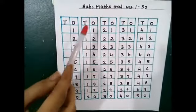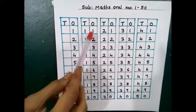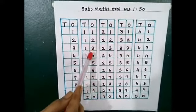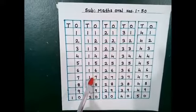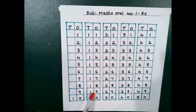So we are going to use tens and ones column. 11, 12, 13, 14, 15, 16, 17, 18, 19.